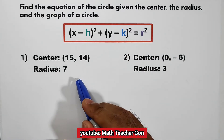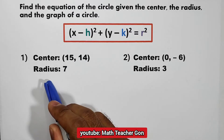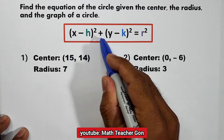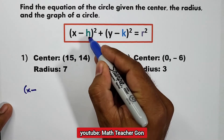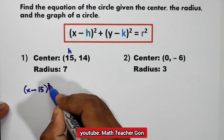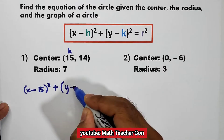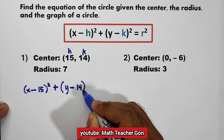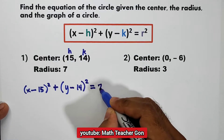Let us have item number 1. The center is equal to (15, 14) and the radius is 7. Using the center-radius form: x minus h, where h is equal to 15, so (x minus 15) squared, plus the quantity of y minus k, where k is equal to 14, squared, is equal to r, where r is equal to 7, squared.